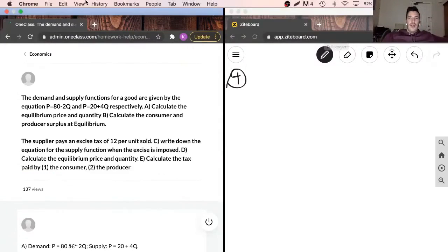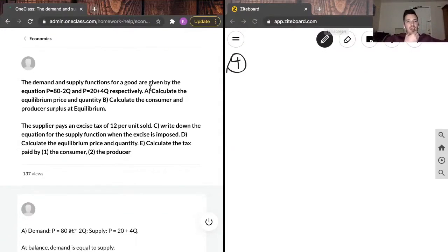Question 4 reads, the demand and supply functions for a good are given by the equation P equals 80 minus 2Q and P equals 20 plus 4Q, respectively.